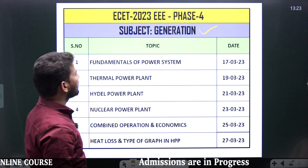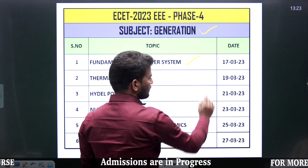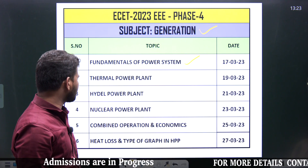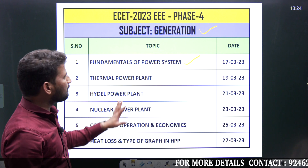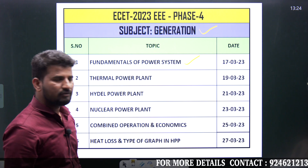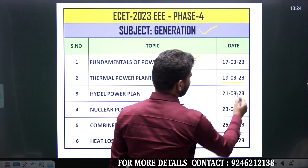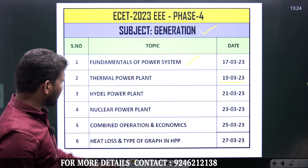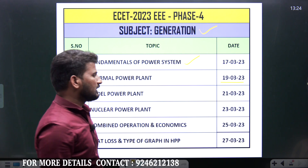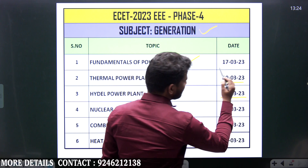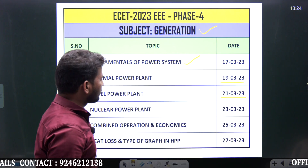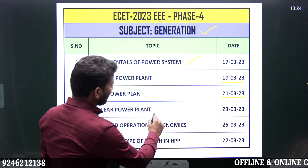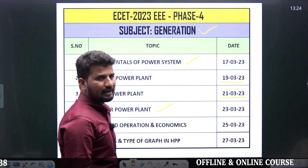The first exam will be on the Fundamentals of Power System on the 17th of March. The next exam will be on Thermal Power Plant, conducted on the 19th of March. The third exam will be on Hydel Power Plant on 21st of March. And the 23rd of March will be Nuclear Power Plant.